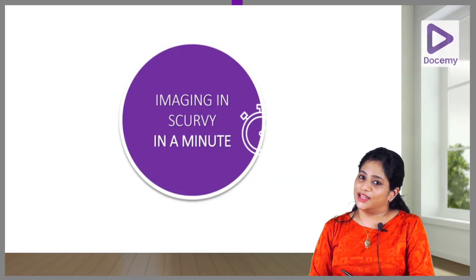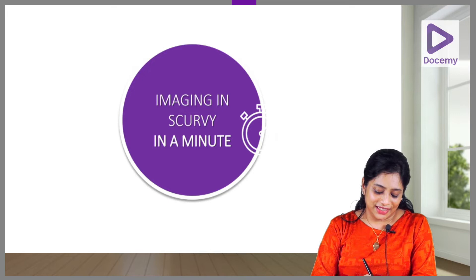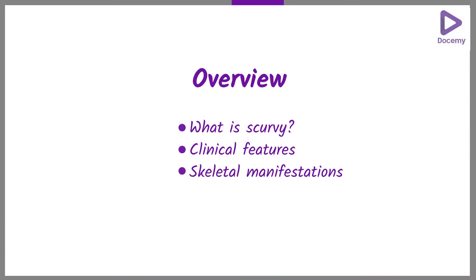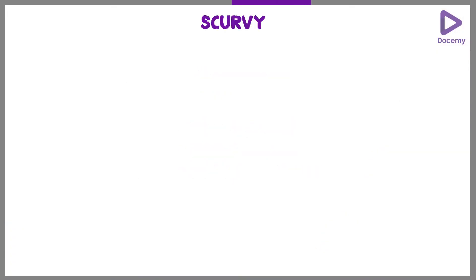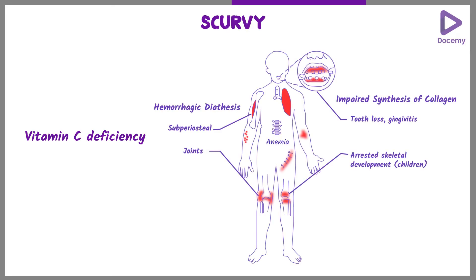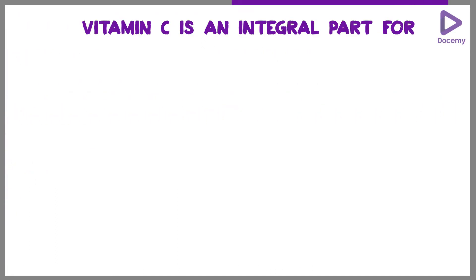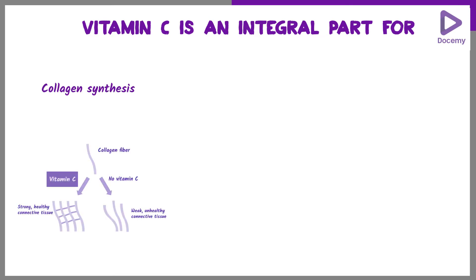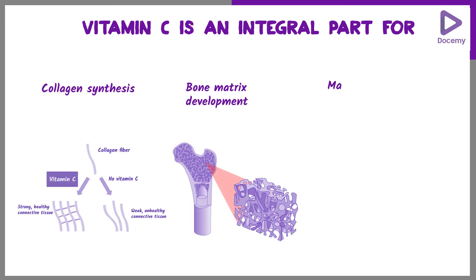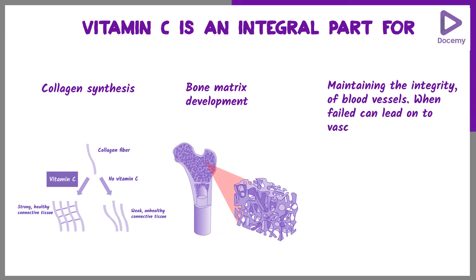Imaging in scurvy. Scurvy is due to vitamin C deficiency, and vitamin C is an integral part of collagen synthesis for development of bone matrix and maintaining the integrity of blood vessels. When this fails, it can lead to vascular fragility.